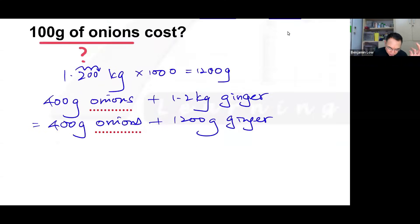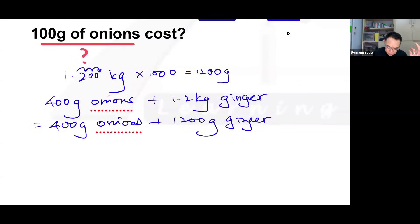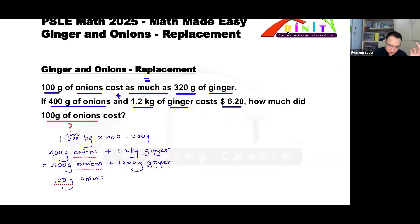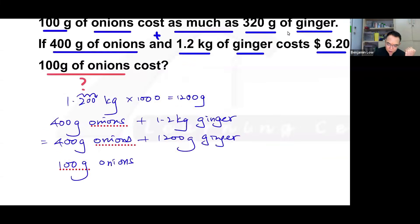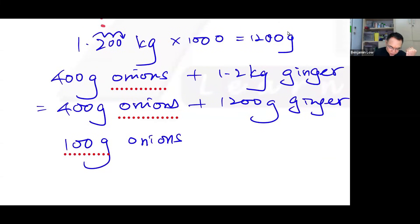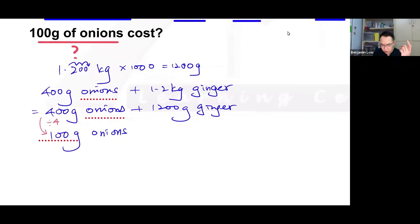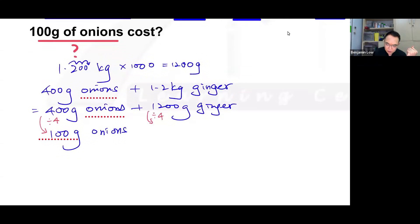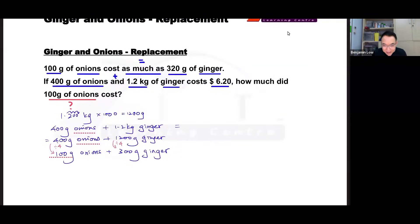So I want to change 400 grams of onions into 100 grams of onions because I know that 100 grams here is equals to this. So I'm going to divide 400 grams. But if I'm going to divide this, then I'm also going to have to divide the ginger. So I also divide by four. If I divide this by four, I will get 300 grams of ginger. And not only should you divide the weight of ginger and onion, you should also involve the money.